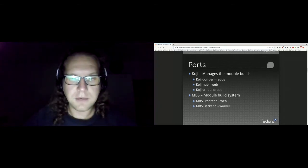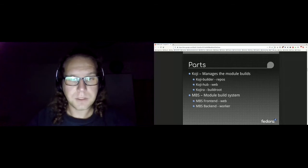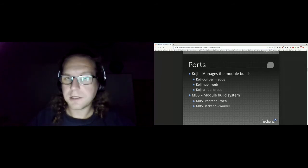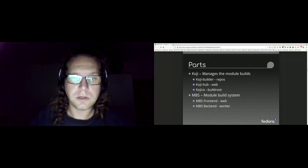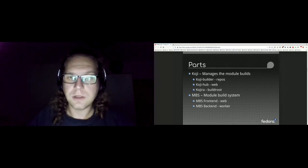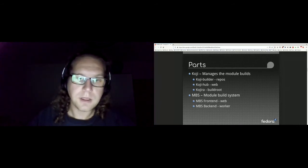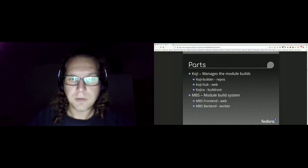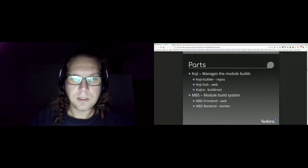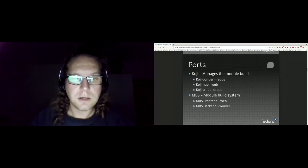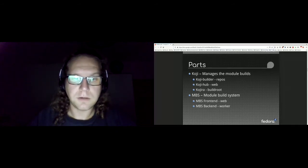The MB Box itself has five parts but two main applications. The first is Koji, which manages module builds but doesn't actually do them. Koji has three small components: Koji Builder, which is used in MB Box for creating new repositories; Koji Hub, which is a web interface where you can see what is being built; and Koji, which works with different build routes.